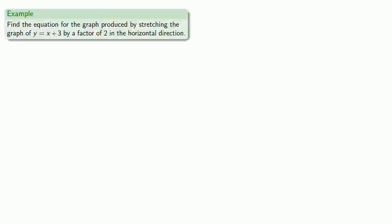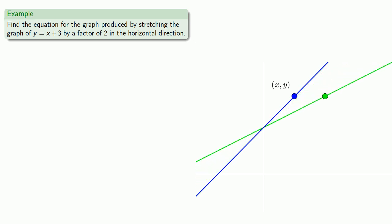For example, let's find the equation for the graph produced by stretching the graph of y = x + 3 by a factor of 2 in the horizontal direction. If (x, y) is a point on the graph, then a new point will be (X, Y), where our new x-coordinate is twice what the old x-coordinate was, and our y-coordinate remains the same.